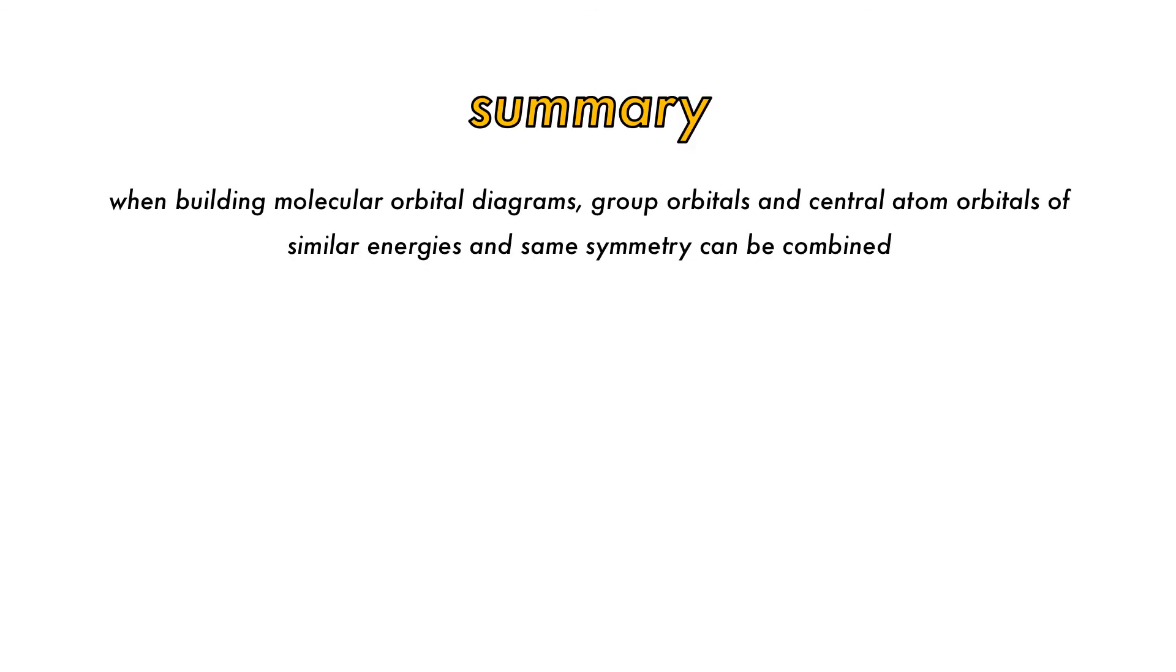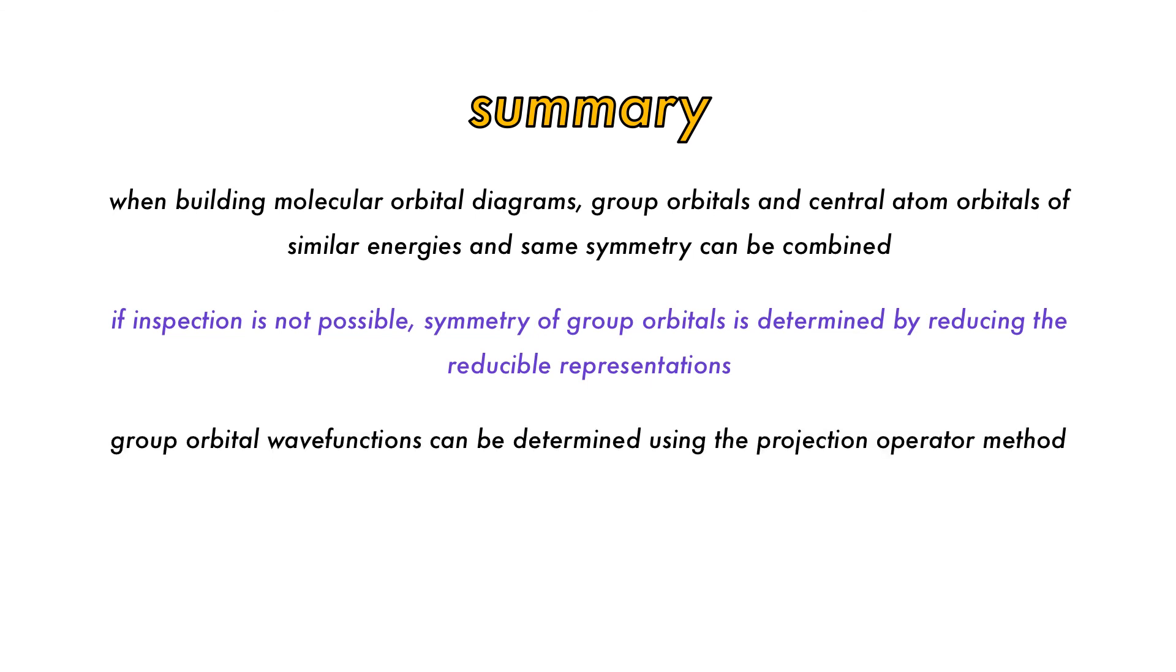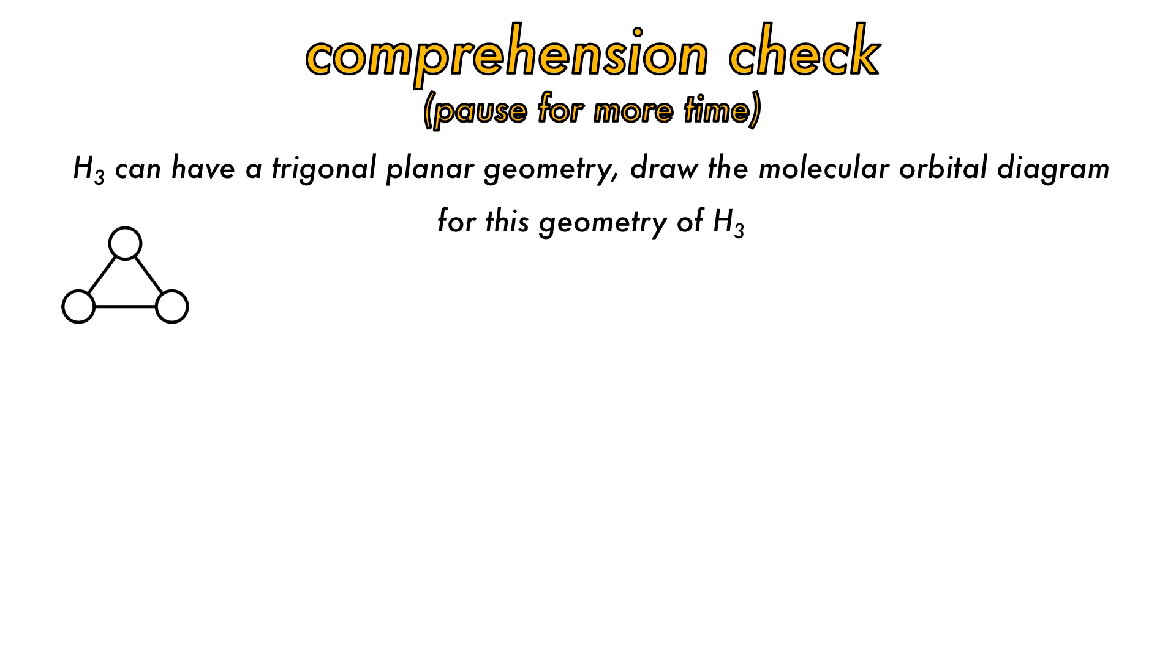So in summary, when building molecular orbital diagrams the central atom atomic orbitals and outer group orbitals are combined to make molecular orbitals when they have similar energies and are symmetry matched. The symmetry of the group orbitals can always be determined by reducing the reducible representation if inspection is not possible. Degenerate group orbital wave functions can be determined using the projection operator method through orthogonalization and normalization. Let's check comprehension.